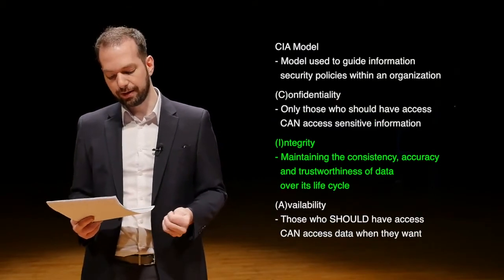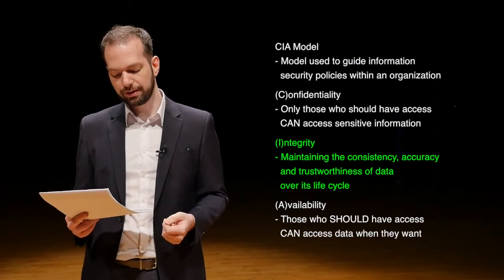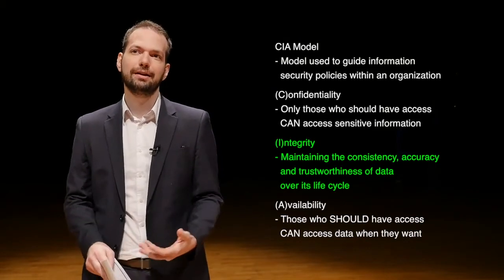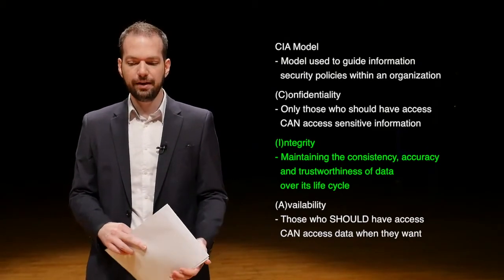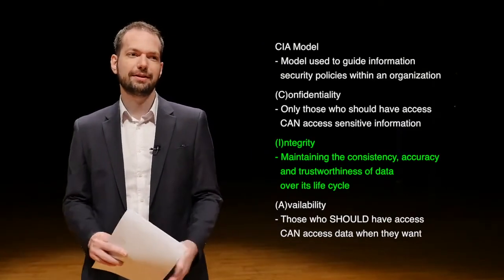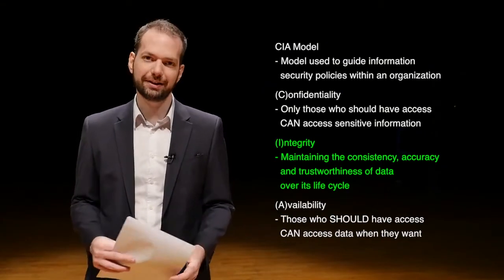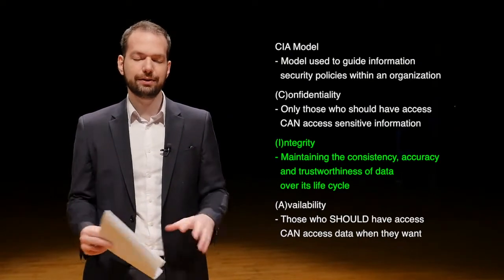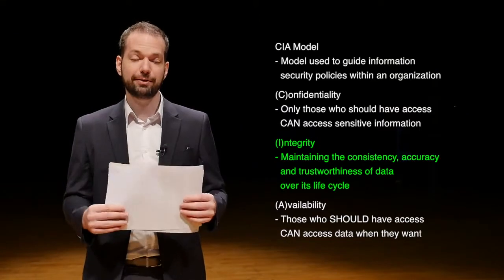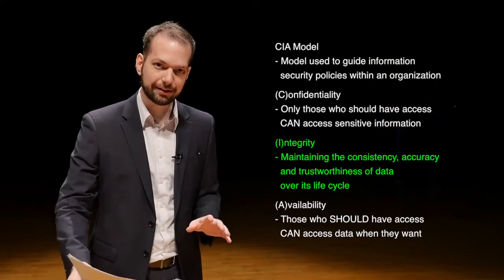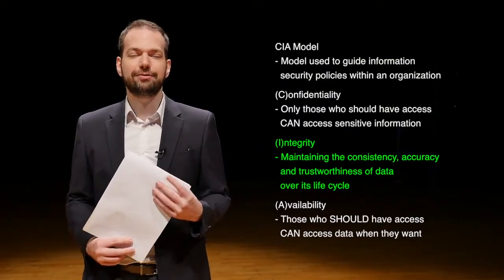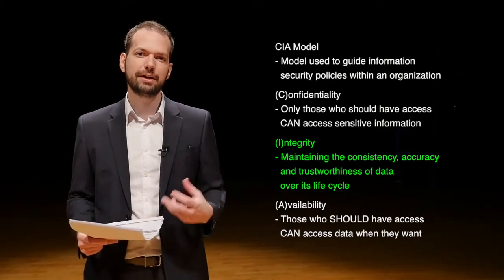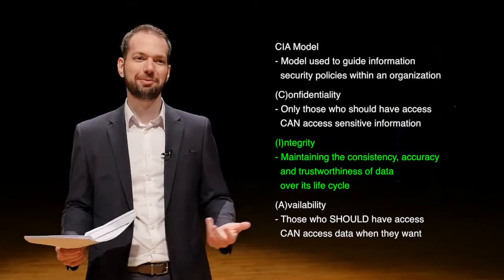Next in the CIA model is Integrity — maintaining the consistency, accuracy, and trustworthiness of data over its lifecycle. How do we know that data has not been modified or tampered with? For example, how do you know someone hasn't illegally modified the amount of money in your bank account? Or if you send an email, how do you know someone didn't intercept it, change something, and send it on?